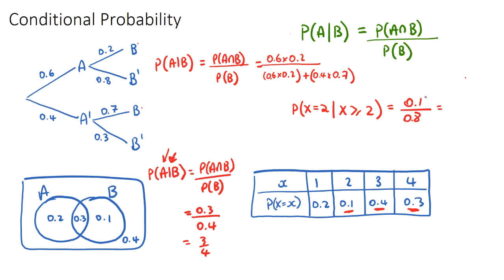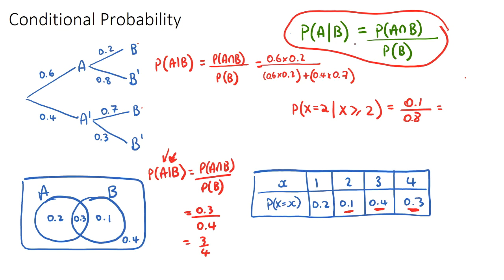These conditional probability questions appear in the harder sections of exams. The goal is to be confident with the formula, or really understand what the question is asking. The given-that event becomes the denominator of your fraction, and the intersection of the two events is your numerator. Practice a bunch of these questions throughout some past IB papers. Good luck.